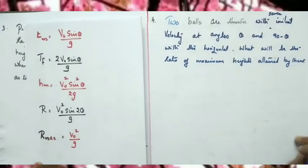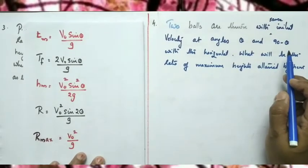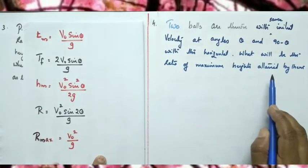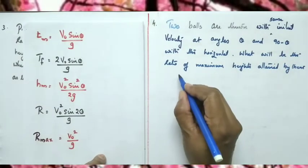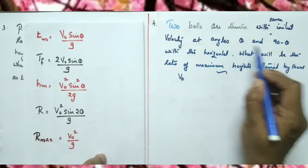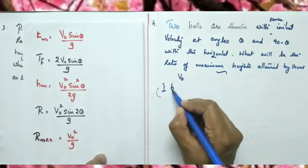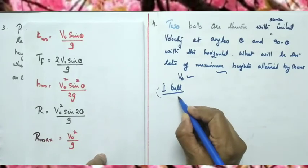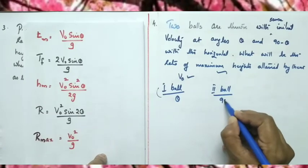Next question: two balls are thrown with the same initial velocity V₀ at angles θ and (90° − θ) with the horizontal. What is the ratio of maximum heights attained by them? For the first ball, angle is θ; for the second ball, angle is (90° − θ).